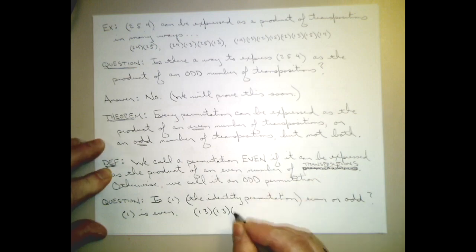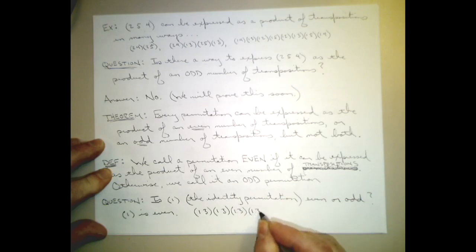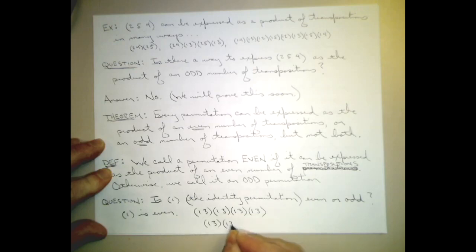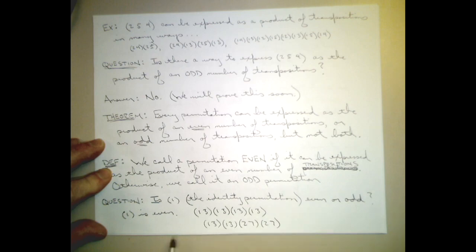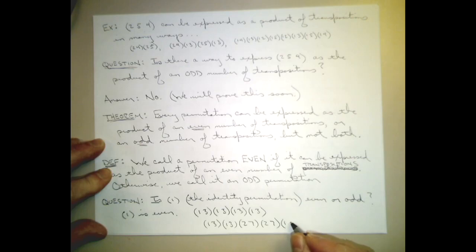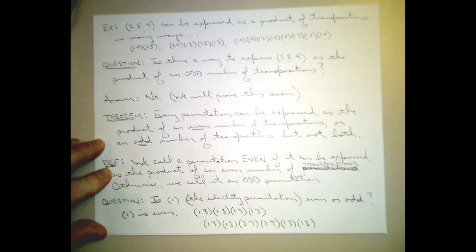So I can easily write the identity permutation as the product of any transposition composed with itself - that's an even number of transpositions. And since the identity permutation can be expressed as the product of an even number of transpositions, we call that permutation even. There are infinitely many ways I could write this - for example (1,3),(1,3),(2,7),(2,7), and so on - but no matter what I pick, I'm always going to wind up with an even number of transpositions to recover the identity permutation.